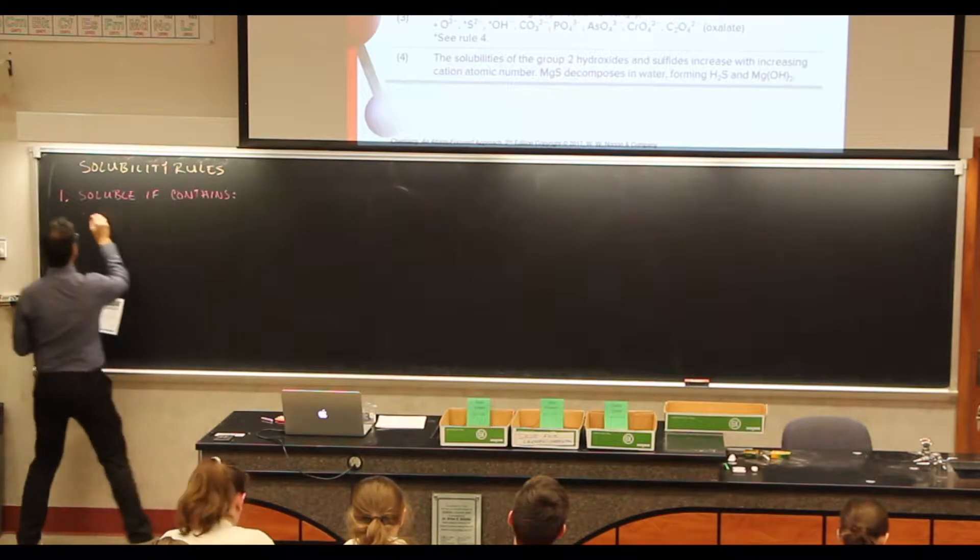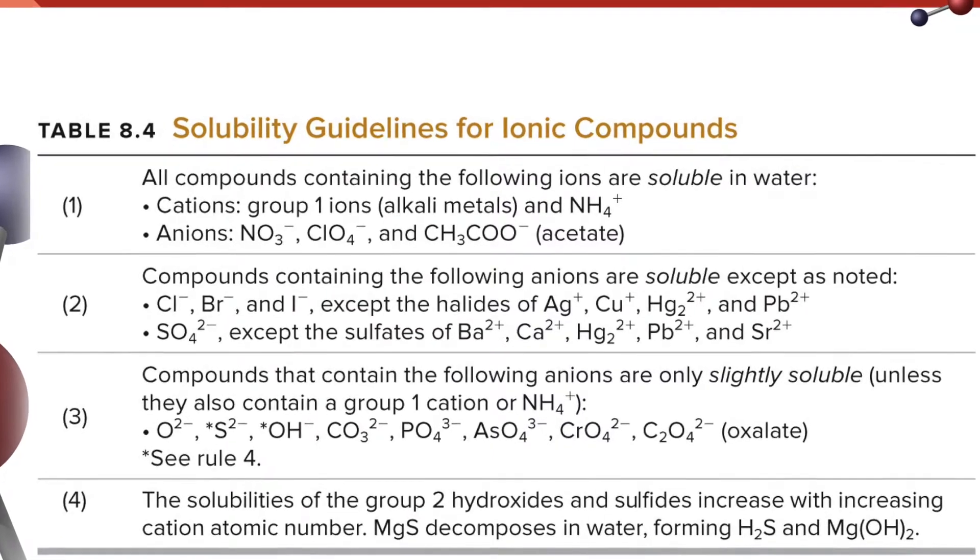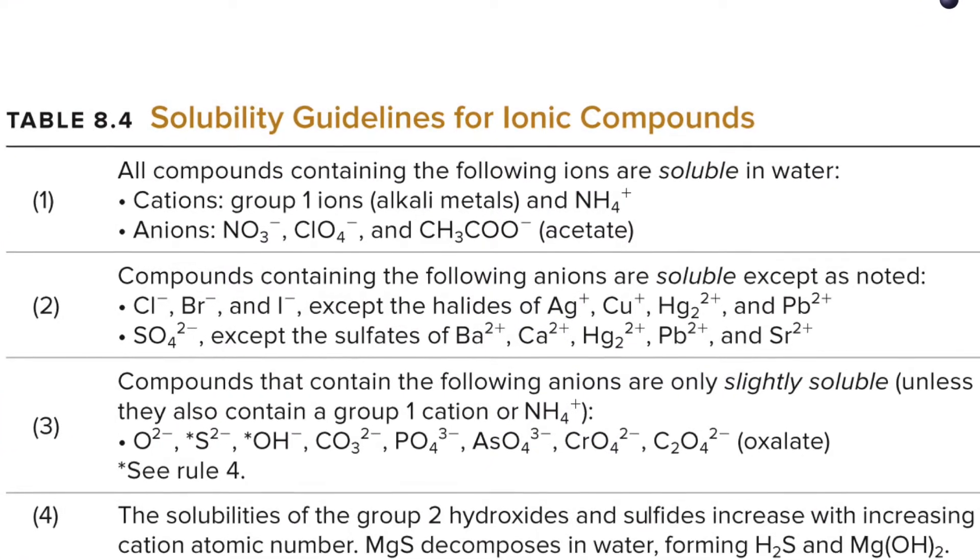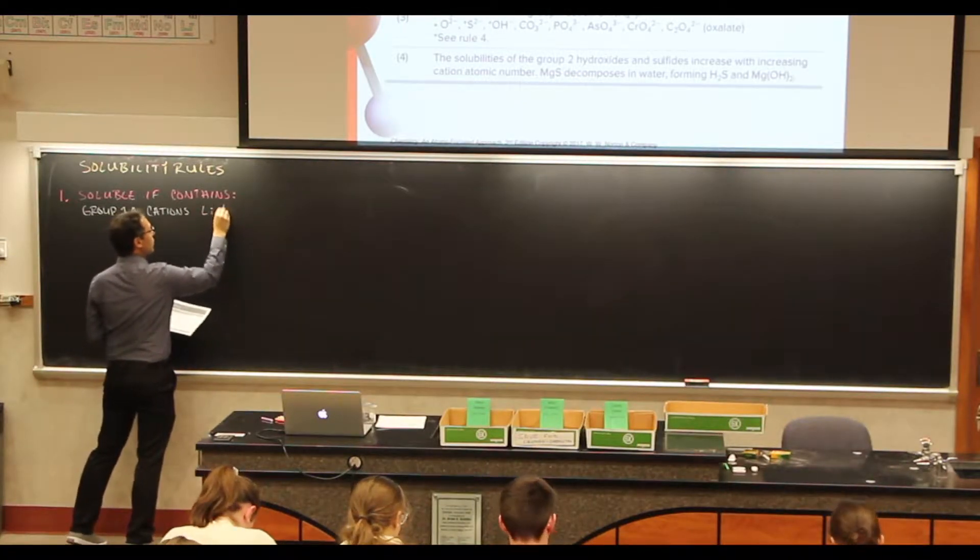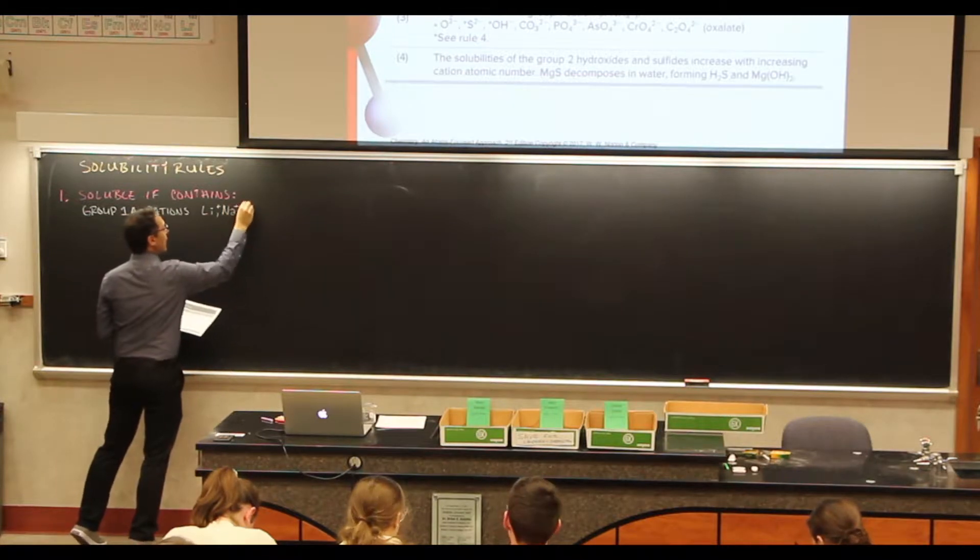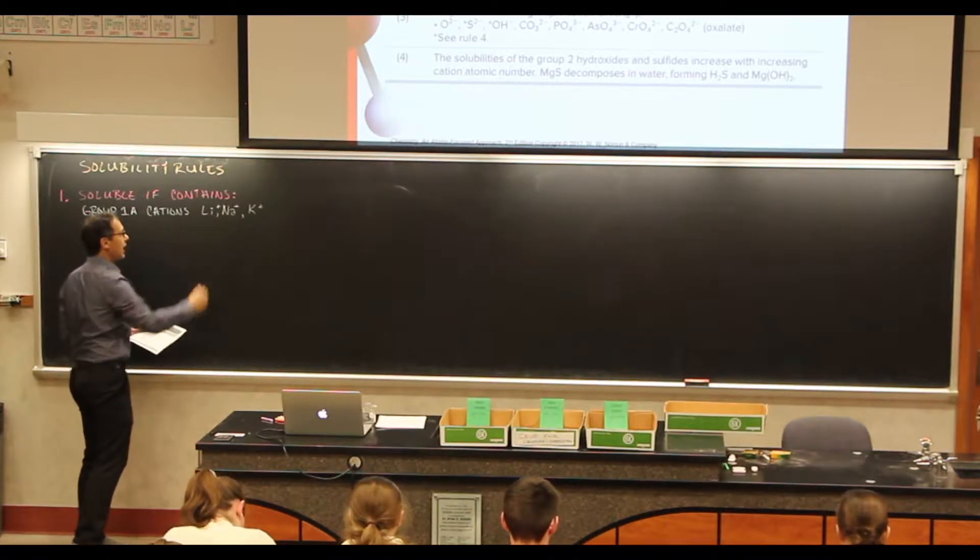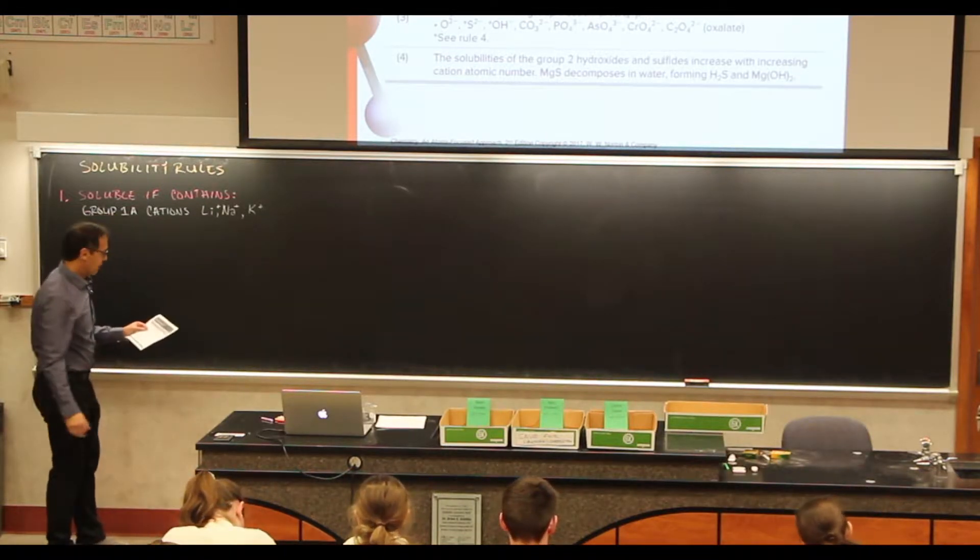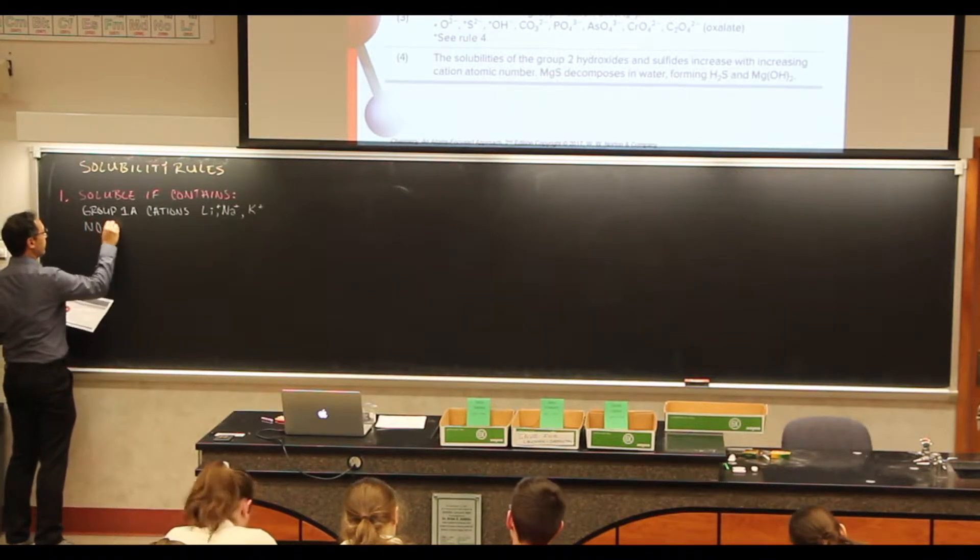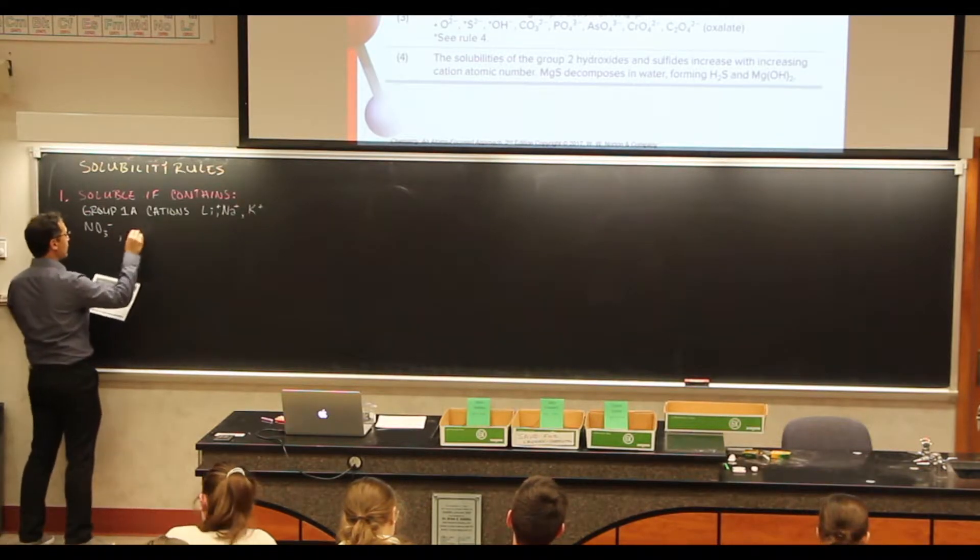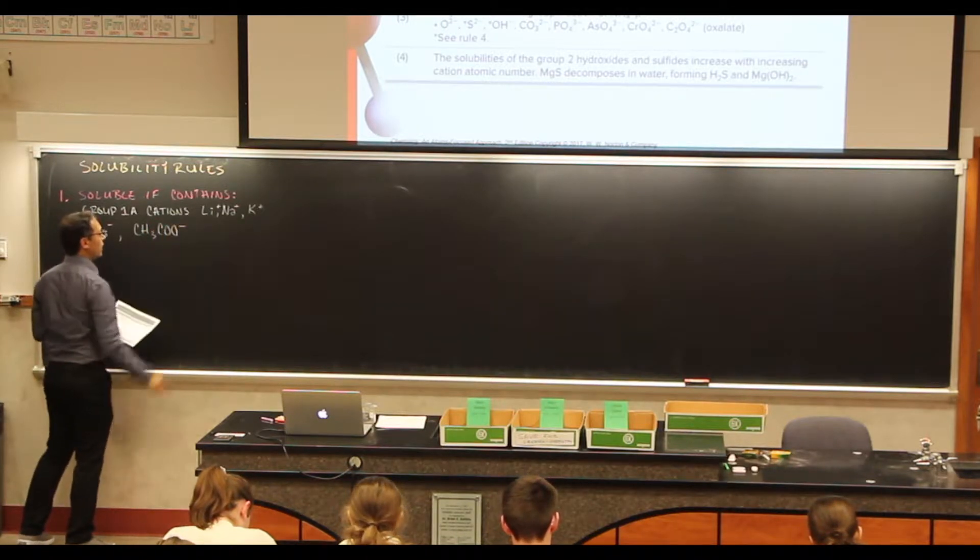So group 1A cations. And examples of that would be like lithium, sodium, potassium. If it contains these things, group 1A metals, group 1A cations, it is soluble. Also, if it contains nitrate, it's soluble.